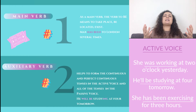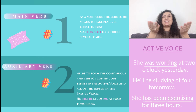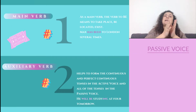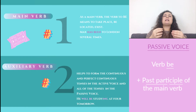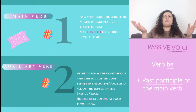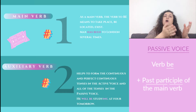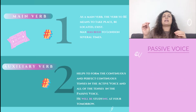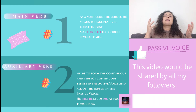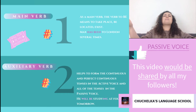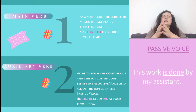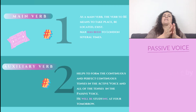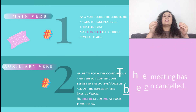'She has been exercising for 3 hours' — present perfect continuous. In the passive voice, it's the verb to be plus the past participle of the main verb — the third column in the verb form table at the end of every textbook. For example: 'This video will be shared by all my followers.' 'This verb is done by my assistant' — is done. 'The meeting has been cancelled' — has been cancelled.